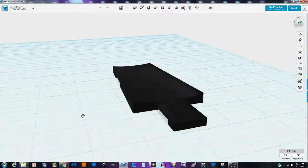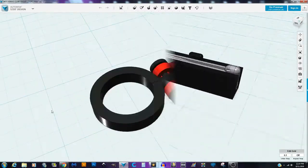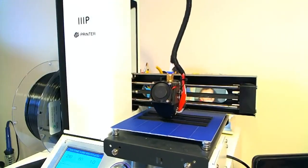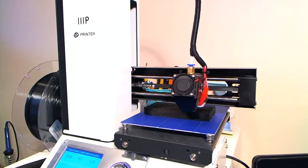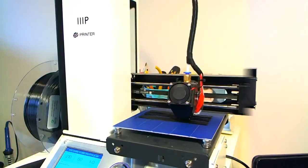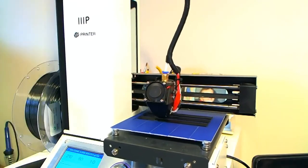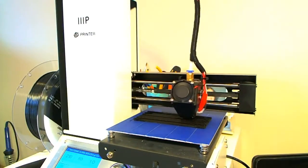I started out by modeling everything on an open source free software called 123D Design. I did all of the rings, the base, the claws, the sheaths, everything. And then I uploaded the STL files to my Monoprice Mini Select 3D Printer and printed all of those out.